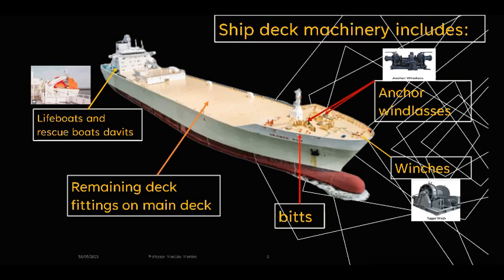Loading cargo requires cranes, conveyors, elevators and so on. These equipment systems move cargo from dock to ship. Cranes load and unload goods while conveyors or elevators move them about the ship.